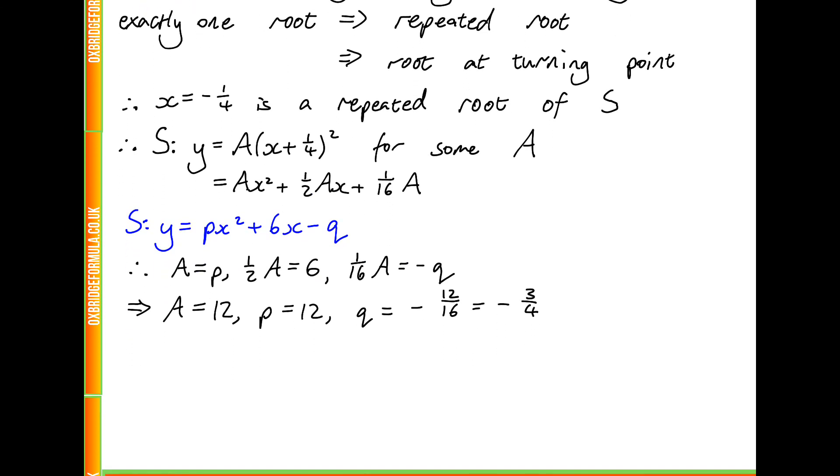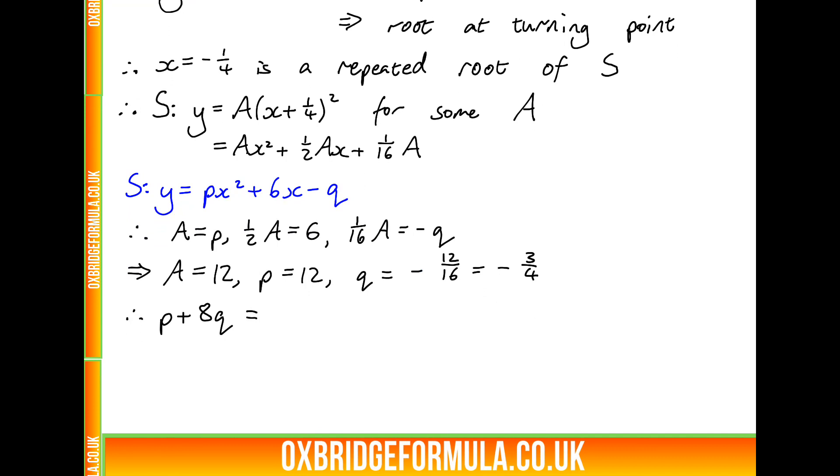And the question asked us to find p plus 8q. So if we substitute in the value p equals 12, and q equals minus 3 quarters, this is 12 plus 8 times minus 3 quarters, which is just equal to 6. And if we look back at the options at the start of the question, we see that option a was p plus 8q is 6. So the answer is option a.